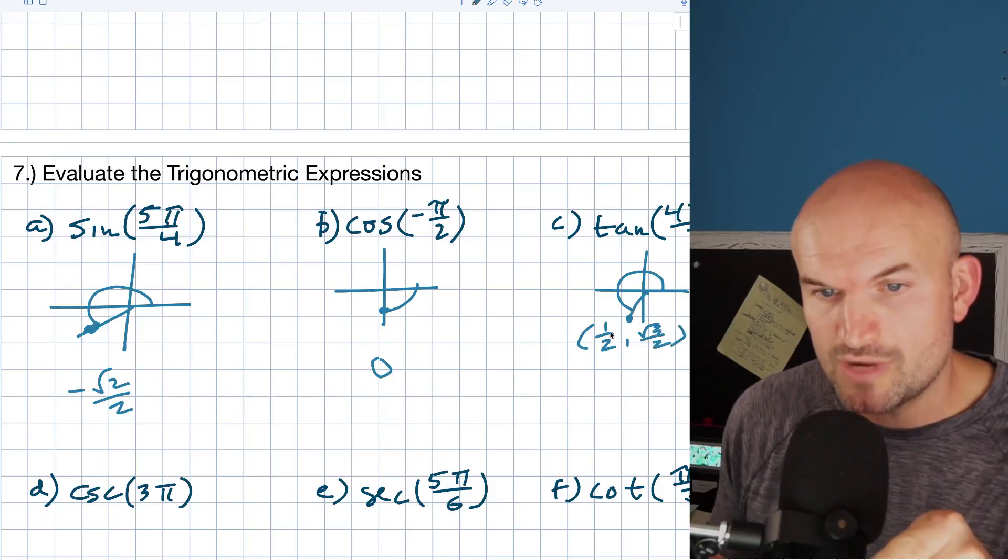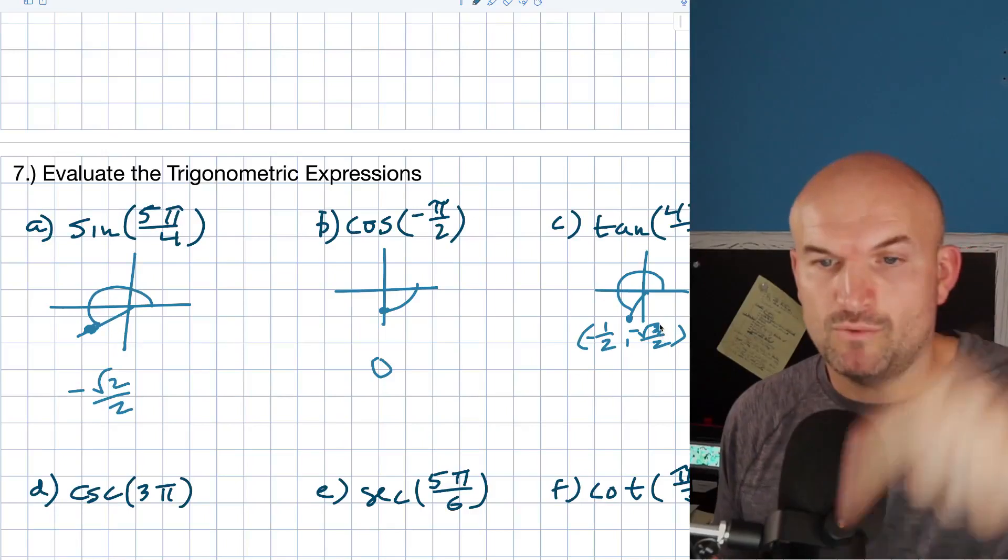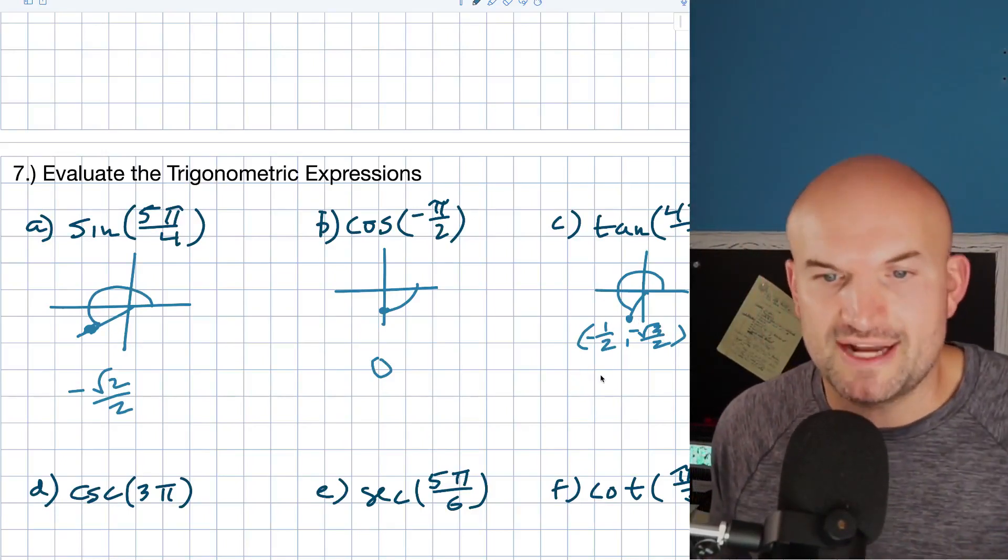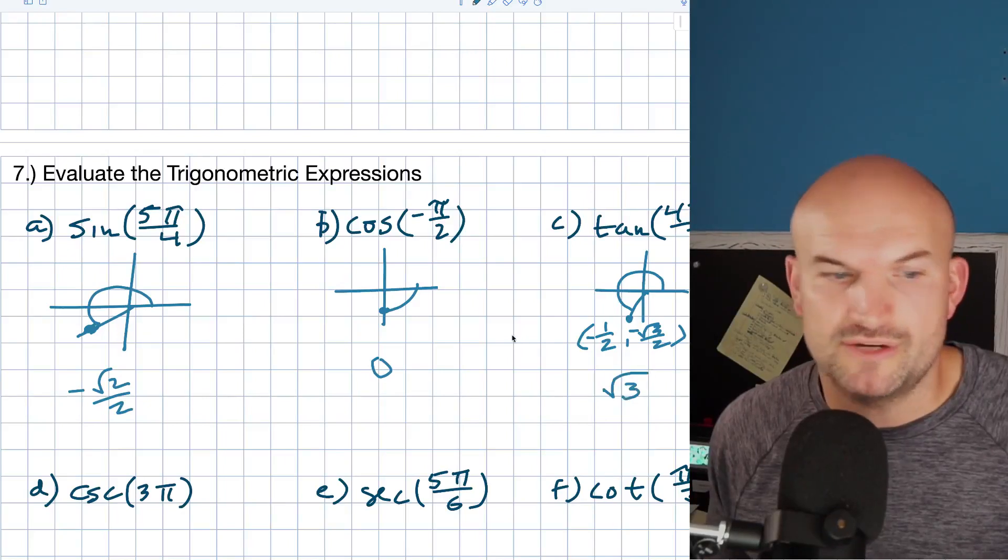But again, remember, it's in the third quadrant. So, that's a negative and a negative. So, now I have the y coordinate over the x coordinate. Well, the negatives and the 2s are just going to divide out. So, that's going to leave me with a square root of 3.